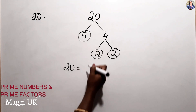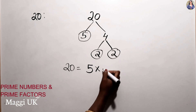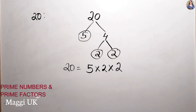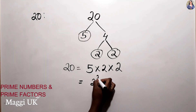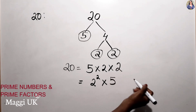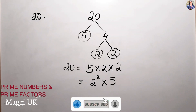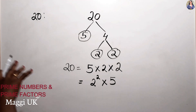So for 20, the prime factorization is: 20 = 2 × 2 × 5. You can write the answer like this, or if they ask in index form, since we have two 2s, you write it as 2² × 5. If you had three 2s, you would write 2³. In an exam, if they ask for index form, you must write it that way.